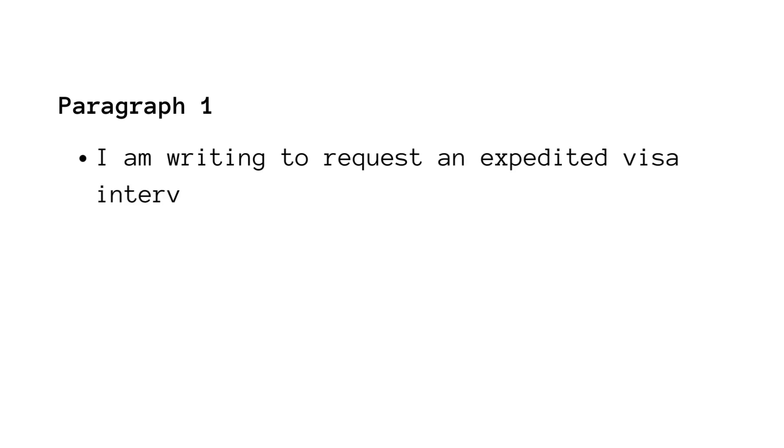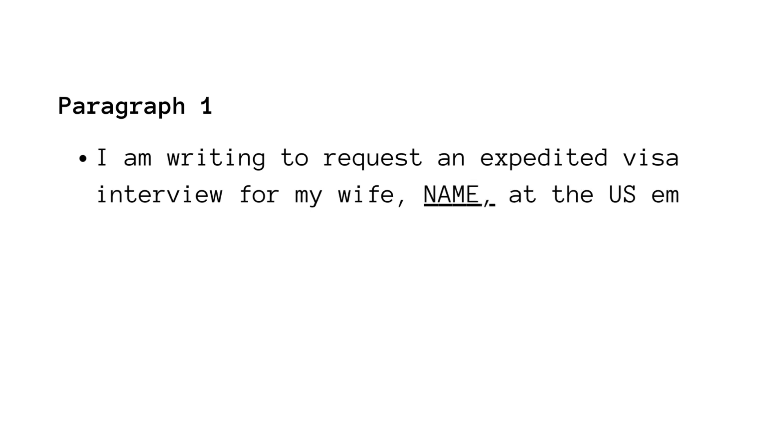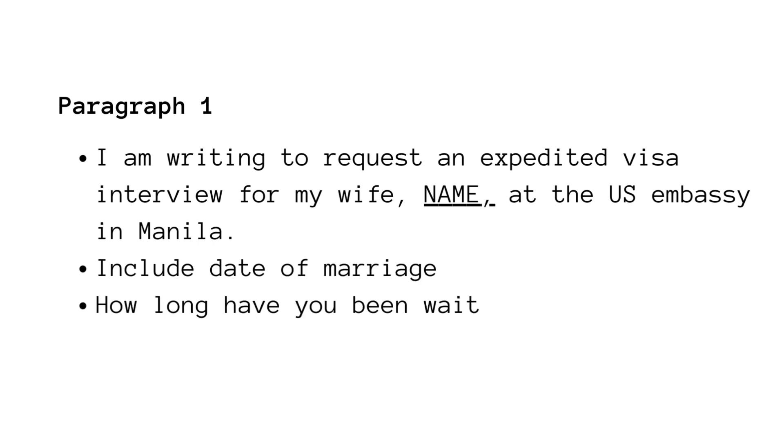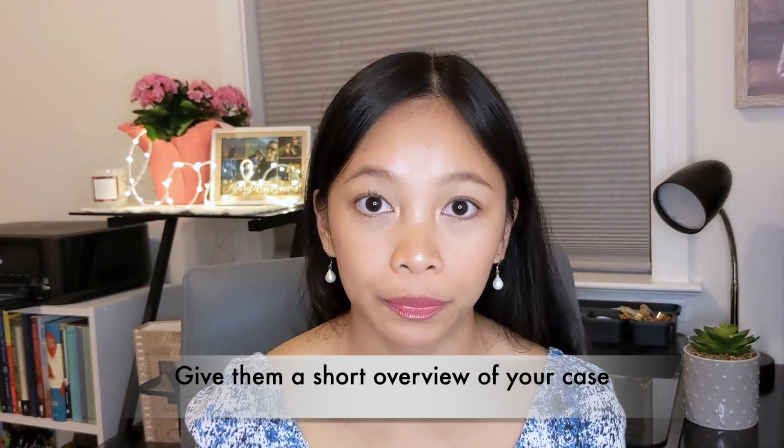The first paragraph is a summary of ideas — you don't have to copy this, but base it on your own situation and fill in the blanks. It started as: 'I am writing to request an expedited visa interview for my wife/husband [name].' State the date you got married, how long you have been waiting, and what is the reason. Some of you have probably been waiting for two years or so — that's another thing you can put in there.